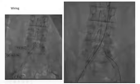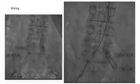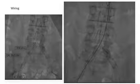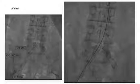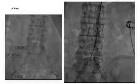However, retrograde wiring of the left common iliac artery from the left femoral artery access using a CXI catheter and various 0.035 and 0.018 wires were unsuccessful. Finally, wiring was accomplished from the left brachial artery long sheath access with the help of an A1 catheter and a 0.014 wire.